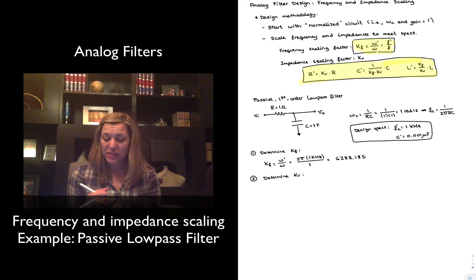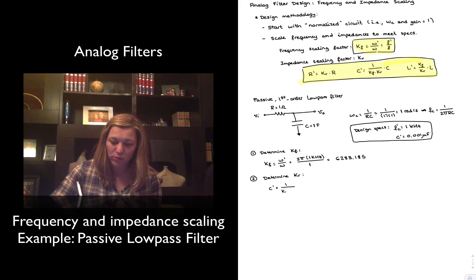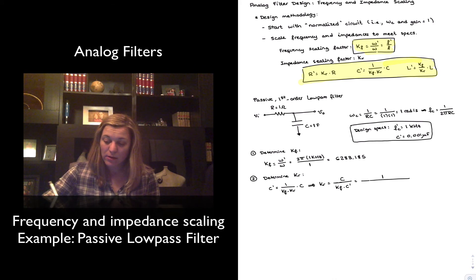In this case, we've decided 0.001 microfarads. And so from there, I can, using my capacitance conversion equation, figure out the value of k r. So c prime will be equal to 1 over k f times k r times c. And so I can solve for k r, and I have k r will be equal to c divided by k f times c prime. My c, obviously, is just my 1 farad capacitor in the circuit.